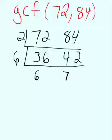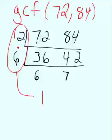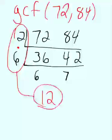And nothing will go into both 6 and 7. So again, we take what we've divided out, in this case the 6 and the 2, multiply them together, and we get our GCF of 12.